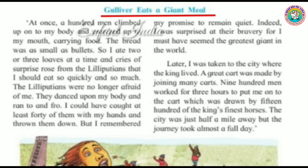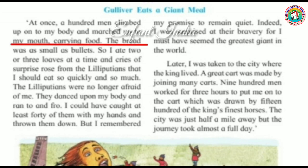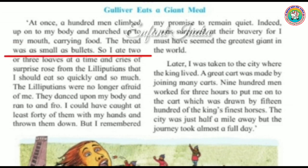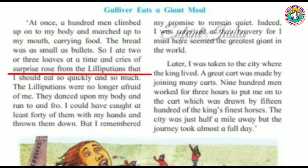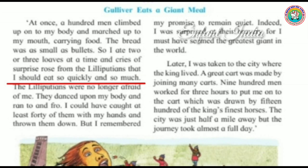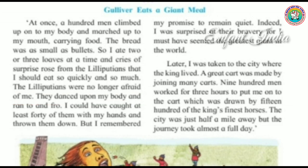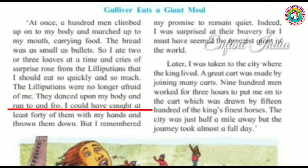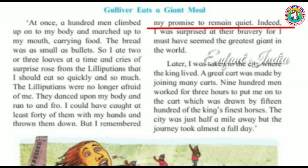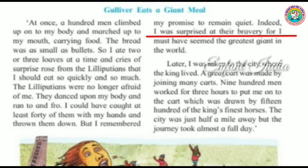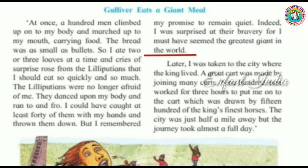Gulliver eats a giant meal. At once, a hundred men climbed up onto his body and marched up to his mouth carrying food. The bread was as small as bullets, so he ate two or three loaves at a time. Cries of surprise rose from the Lilliputians at how quickly and how much he ate. The Lilliputians were no longer afraid of him; they danced upon his body and ran to and fro. He could have caught at least forty of them with his hands, but he remembered his promise to remain quiet.